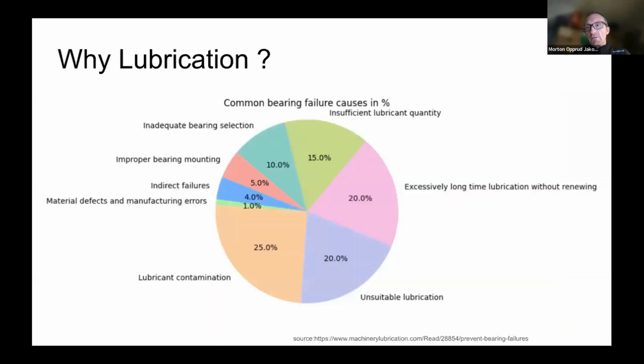So why is lubrication interesting? It's interesting because, depending on what literature you read, somewhere between 40% and 80% of bearing defects are initiated by some kind of lubrication issue. It can be contamination or it can be an unsuited lubricant or too long intervals between relubrication, etc. But a large fraction of these bearing defects we saw before are often initiated because of some kind of lubrication issue.